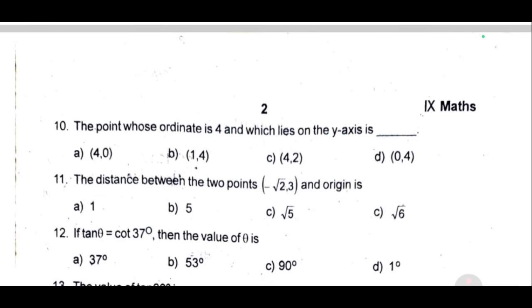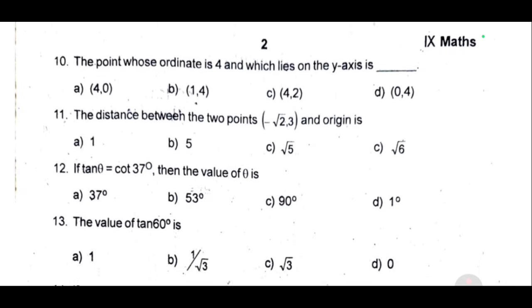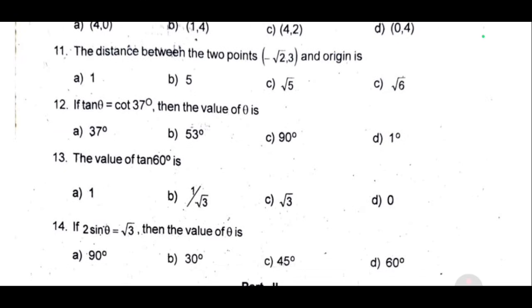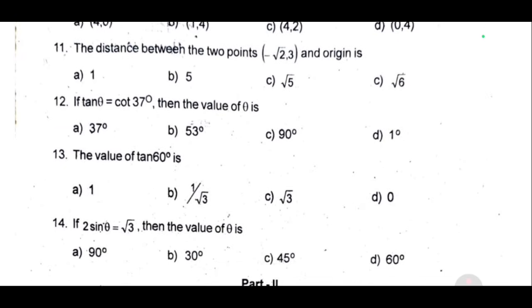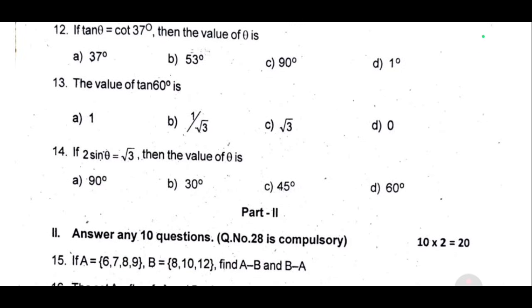Eleventh one, the distance between the two points minus root 2 comma 3 and origin is dash. Twelfth one, if tan theta equal to cot 37 degree, then the value of theta is dash. Thirteenth one, the value of tan 60 degree is dash. Fourteenth one, if 2 sin theta equal to root 3, then the value of theta is dash. So here we are Part 2 passing, two marks questions.